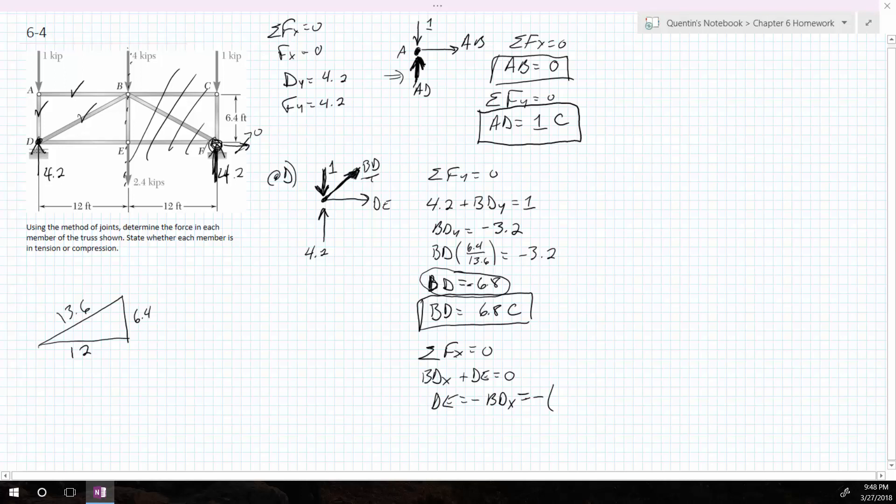So it's minus 6.8 times the 12 over 13.6. So therefore, DE is equal to a plus. And that works out to be 6.